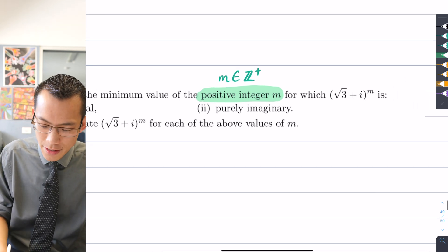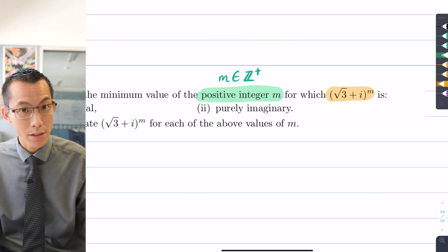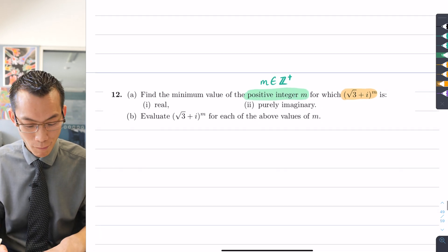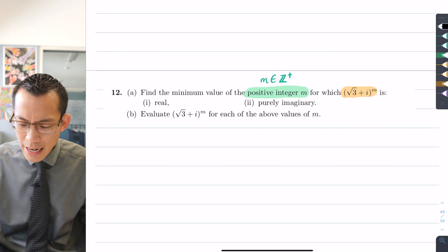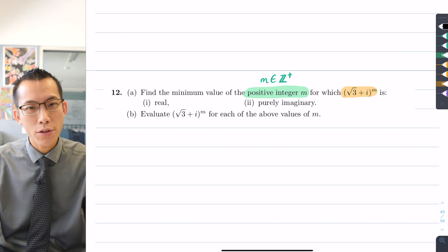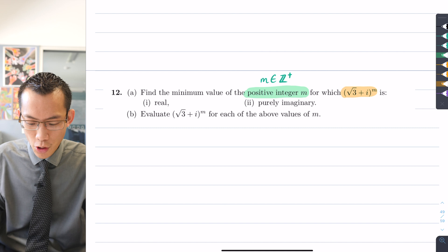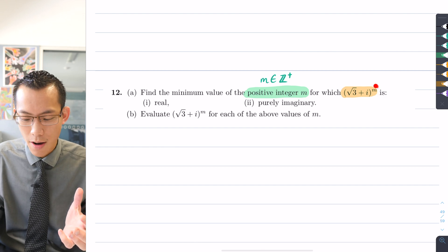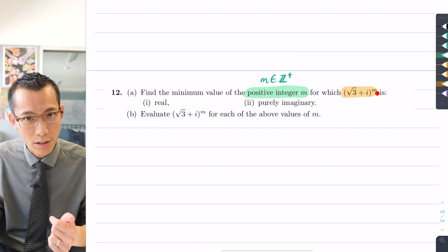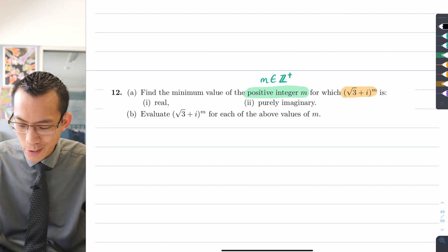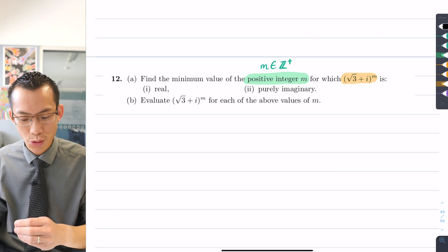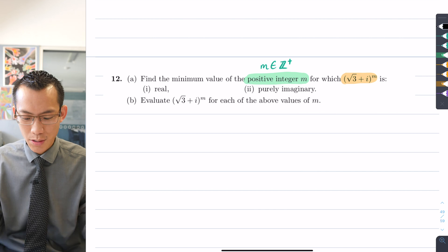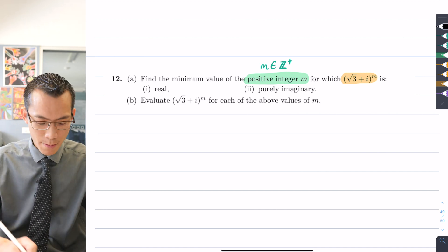Secondly, we have this setup where there's some complex number √3 + i being raised to the power m. We want to find the values for which it's real and purely imaginary. Even though the question doesn't suggest it, de Moivre's theorem is going to be very useful here because we're raising to a power, and de Moivre's theorem gives us a very easy way to simplify a complex number raised to a power.